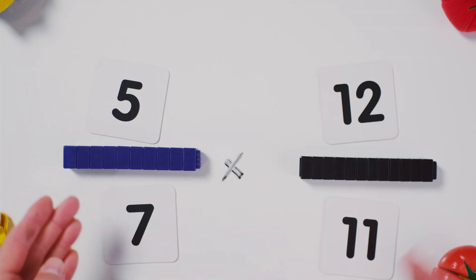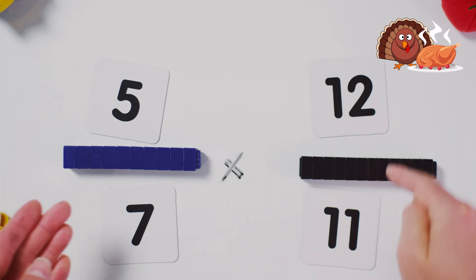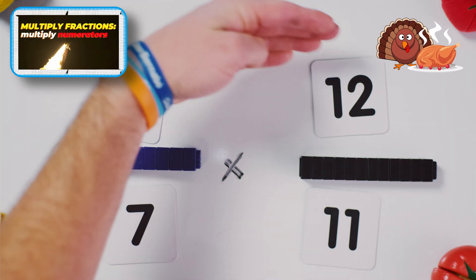Let's multiply five sevenths by twelve elevenths. This guy right here, this turkey, that is an improper fraction. All right, go straight across.